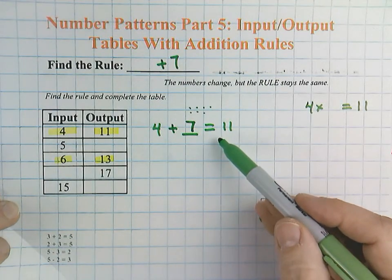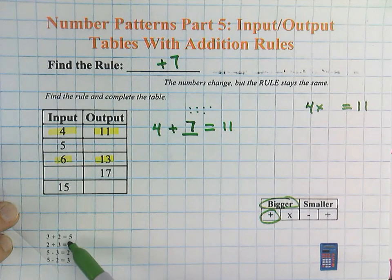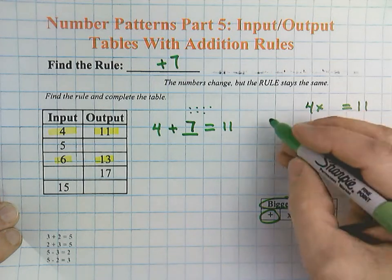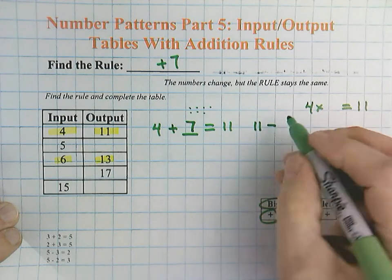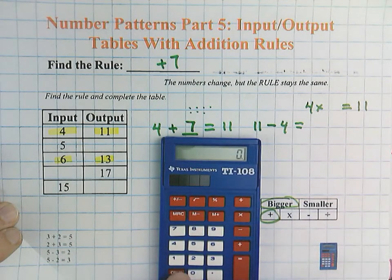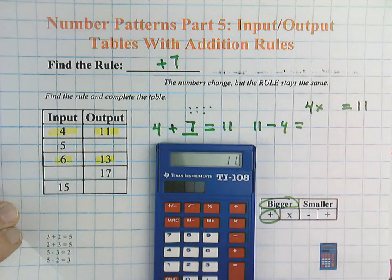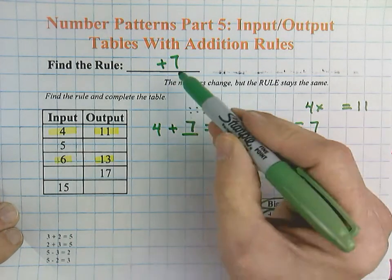You could also use your fact families. Fact families are when you have a set of three numbers and you can add, change the order, or subtract, and the numbers are used interchangeably. So for example, if we had 4 plus blank equals 11, we could use our knowledge of fact families: 11 minus 4 would also get 7. So 11 minus 4 equals 7. So our rule is plus 7.